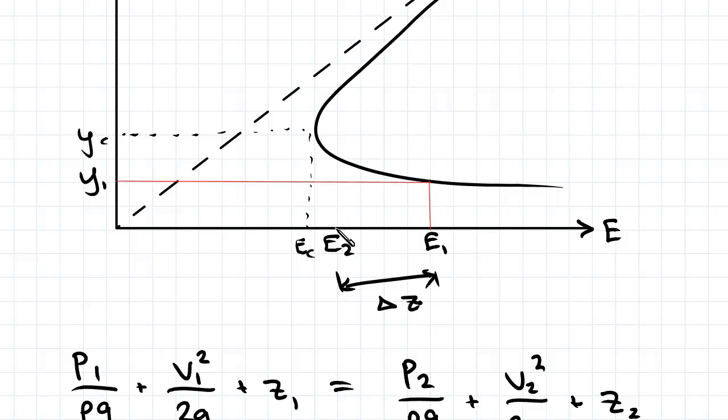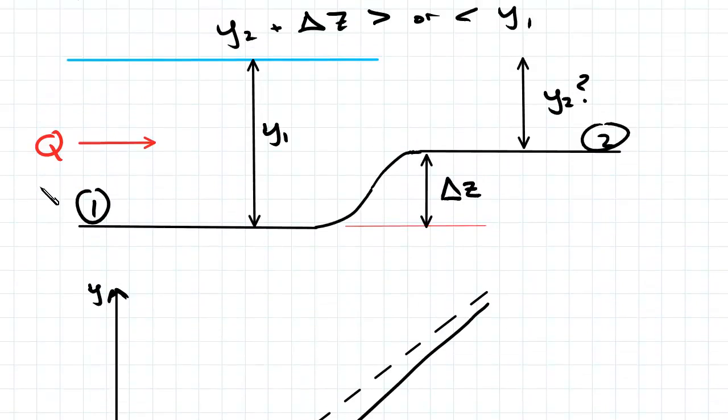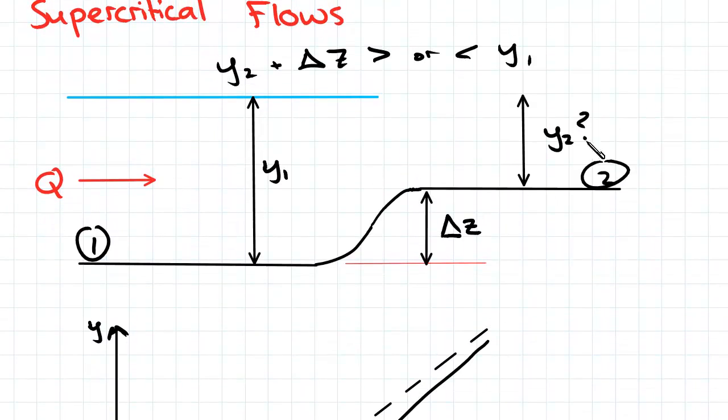y2 is going to be a point above y1, so in the middle there, so that's y2. Now if we go back to the diagram and knowing that y2 is always greater than y1...